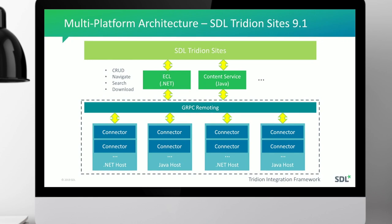What we're trying to achieve is to open up a few extension points to this new integration framework. We're going to start with the ECL (External Content Library) and the new public content service. In future versions, we'll look into other integration points. The idea is that you write the connector once, and it can be used both in the ECL and content service context, as well as future extension points.